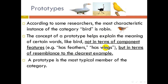We depend not on component features but on the resemblance of the object to the clearest example. A robin resembles the clearest example of birds to a great extent. Given the category 'furniture,' we quickly recognize 'chair' as a better example than 'bench' or 'stool.' Given 'clothing,' people recognize 'shirts' quicker than 'shoes.' Given 'vegetable,' they accept 'carrot' before 'potato' or 'tomato.' There is a general pattern to the recognition process involved in prototypes.